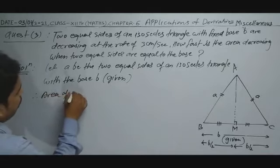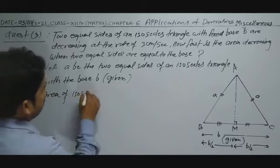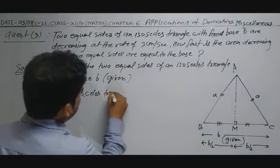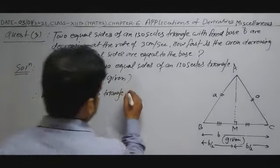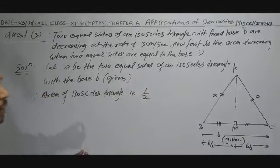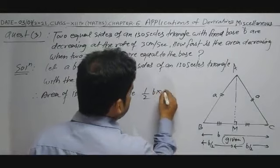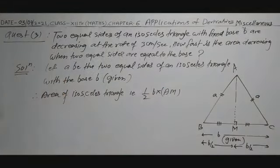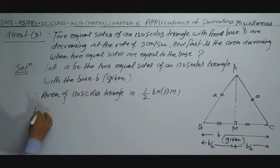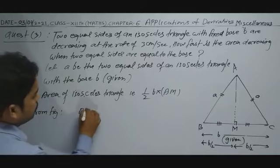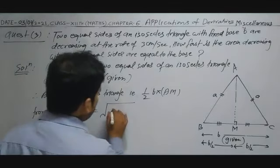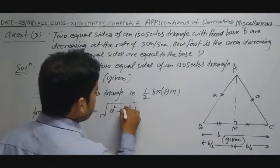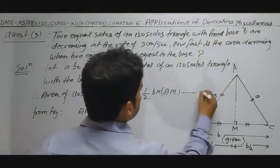Therefore, area of isosceles triangle = (1/2) × base × height = (1/2) × B × AM. Using Pythagoras theorem, AM = √(a² − B²/4). Substituting: area = (B/2) × √(a² − B²/4). Suppose this is equation 1 and equation 2.